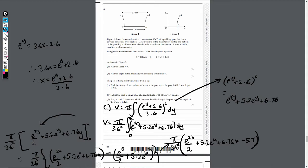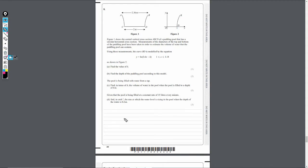And then finally, let's have a look at part D. So we're told, or given the information, that the pool is filled at a constant rate of 15 liters every minute. It says find in centimeters per hour the rate at which the water level is rising in the pool when the depth of the water is 0.2 meters.